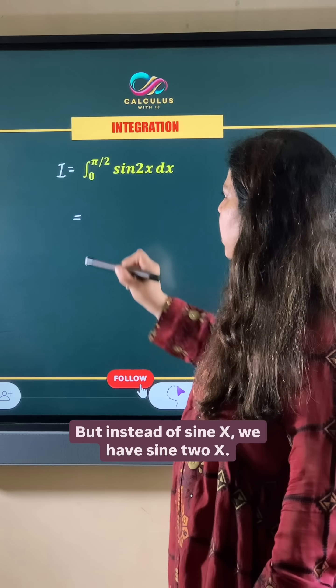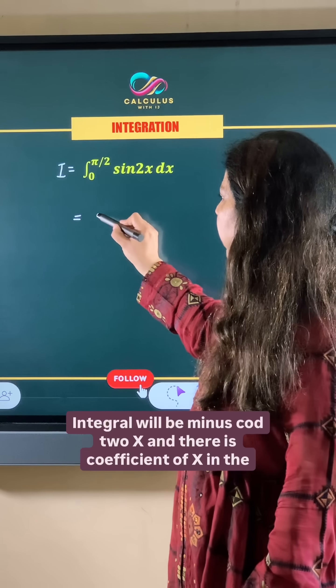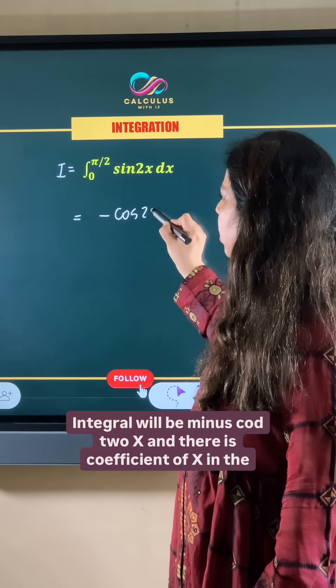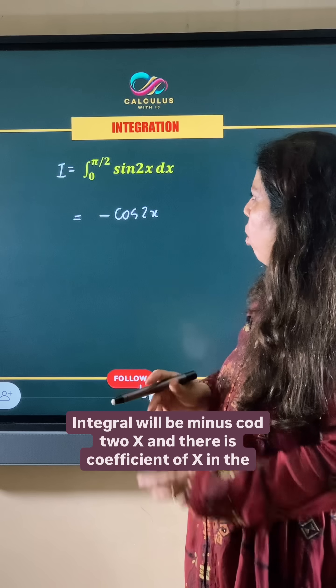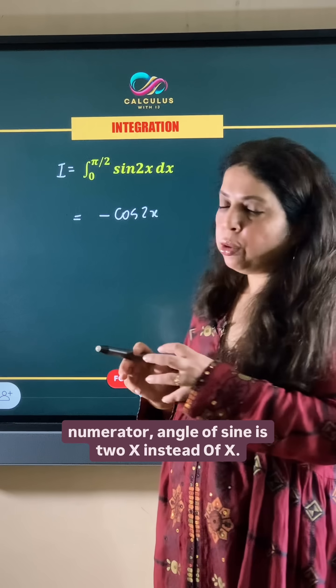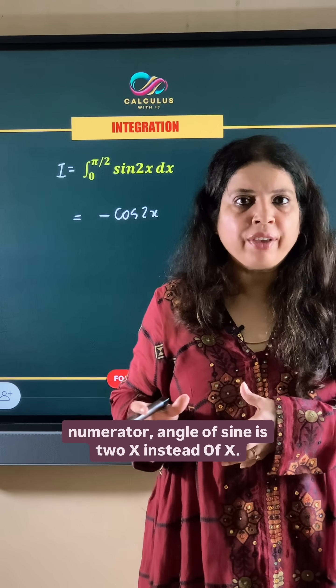But instead of sin x, we have sin 2x. So the integral will be -cos 2x with a coefficient. The angle of sin is 2x instead of x.